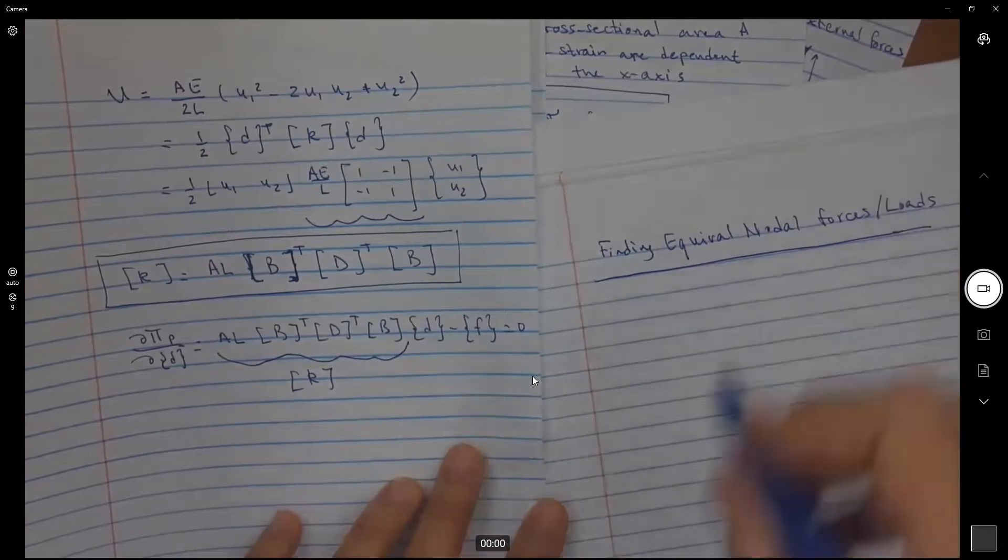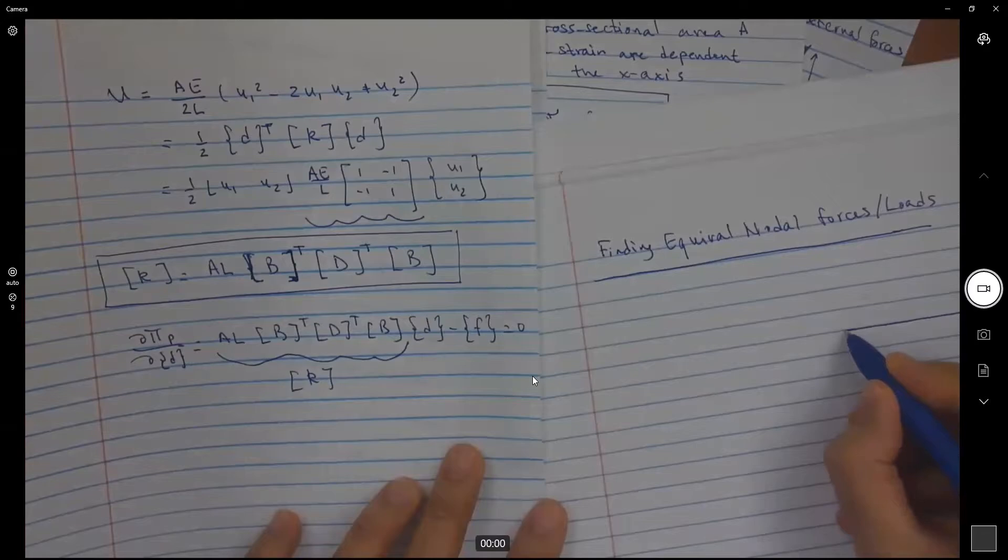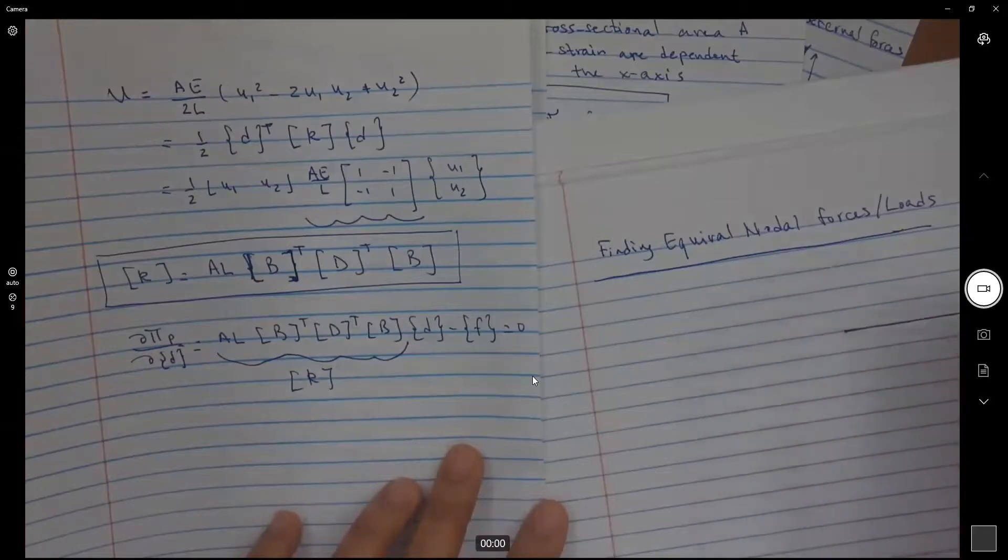We're going to take an example here. We only need to find equivalent nodal forces if we have forces that are applied along the length of the element. If my forces are applied at the nodes, I don't have to find any equivalent ones.